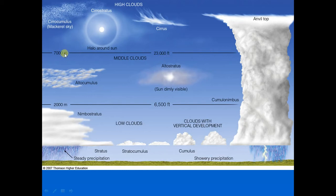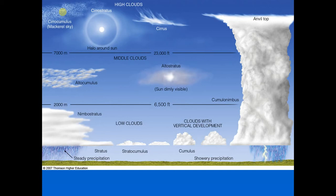High clouds generally form above 23,000 feet (7,000 meters) in the middle and low latitudes. In the high latitudes, where the air is very cold and molecules are close together, they might be found at lower elevations. Because the air above 23,000 feet is cold and dry, high clouds are made exclusively of ice crystals and are fairly thin. They usually appear bright white except near sunrise and sunset when red, orange, and yellow colors can be reflected from the undersides.